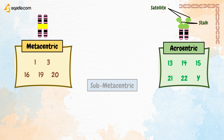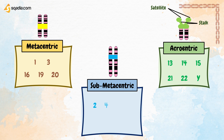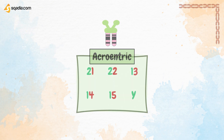The rest are submetacentric — a chromosome whose centromere lies between its middle and its end but closer to the middle — such as chromosomes 2, 4, 5, 6, 7, 8, 9, 10, 12, 17, 18, and 22. You can memorise acrocentric chromosomes using a mnemonic: 13, 14, 15, 21, 22, and Y.